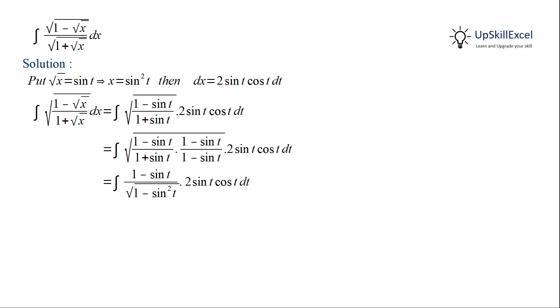Now, 1 − sin²t can be written as cos²t. The square in cos²t cancels with the square root, giving us (1 − sin t)/cos t multiplied by 2 sin t cos t dt.